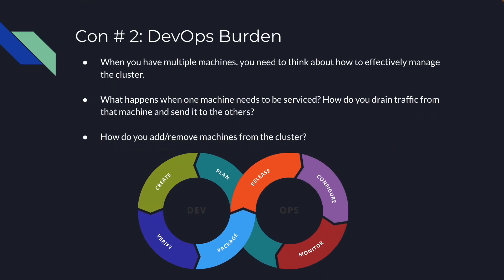Another con is that you now have a DevOps burden. With multiple machines you need to think about how to effectively manage the cluster — what happens when one machine needs to be serviced, how do you drain traffic from that machine and send it to others, and how do you add or remove machines from the cluster. This introduces a DevOps burden you didn't have to deal with when managing just one machine.